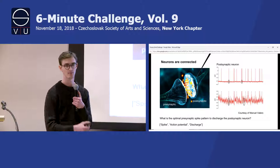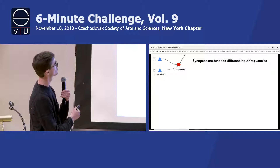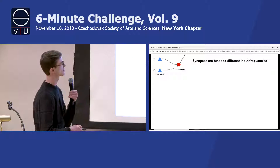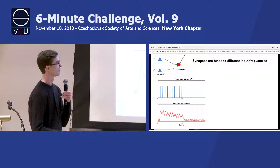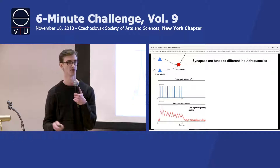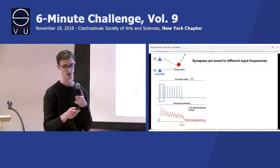That leads to the natural question: what would be the optimal pre-synaptic spiking pattern if we want to discharge this post-synaptic neuron? Consider these two connections — two blue pre-synaptic neurons signaling to the same post-synaptic partner. For the first connection, it's really only the first two pre-synaptic spikes that are effective at driving the post-synaptic neuron. All the other spikes aren't doing anything, meaning this pre-synaptic neuron needs to be clocking along at a relatively low frequency.